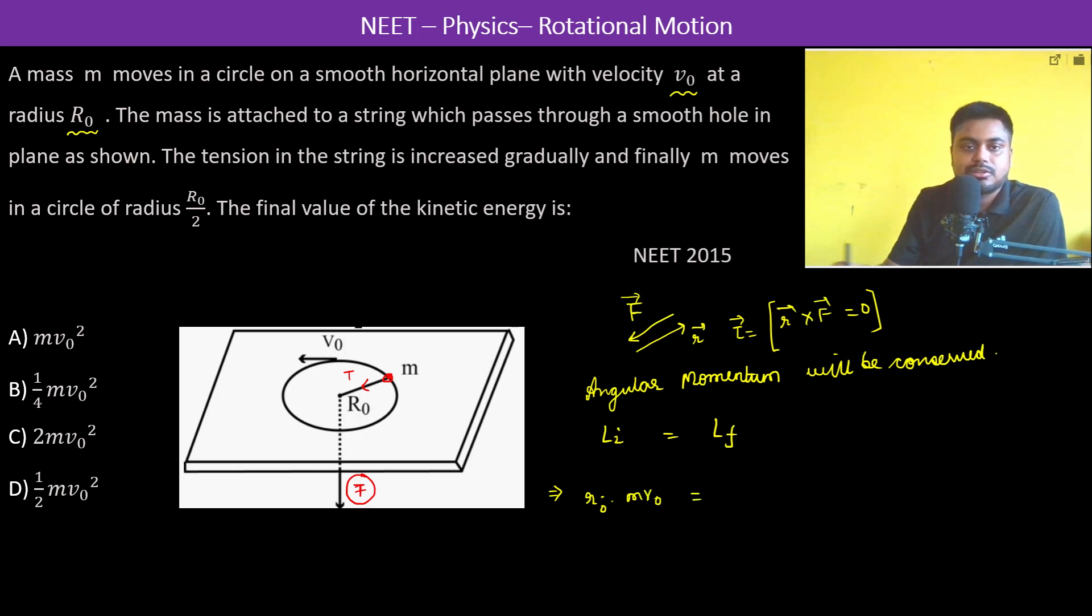Finally, it moves in a radius R naught by 2. So R naught by 2 into M into V1. M R naught M R naught is gone. Therefore V1 is equal to 2 V naught.